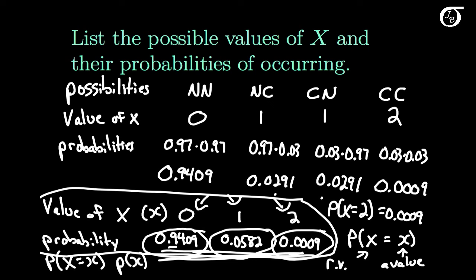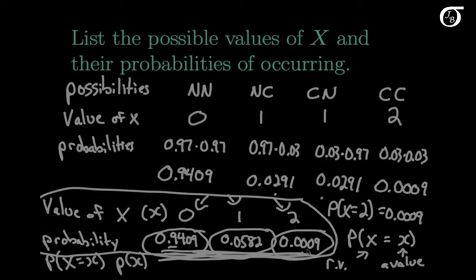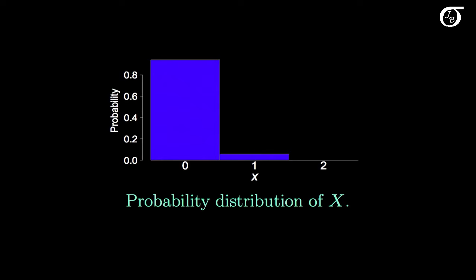We very often plot this out to see what it looks like visually. Here is a visual representation of our probability distribution of X. The probability of 0 was very high, and the probability of 1 was much lower. The probability of 2, at 0.0009, doesn't quite show up visually, but it's there. Plotting out our discrete probability distribution helps us visualize what's happening.